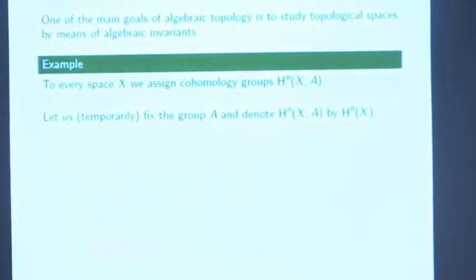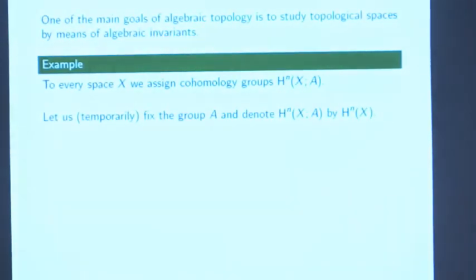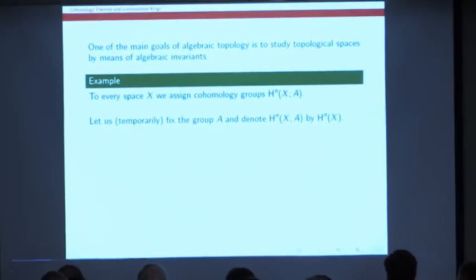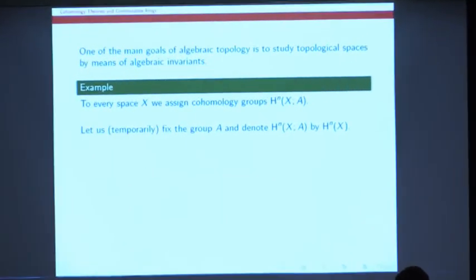And I'm going to start the story not in algebraic geometry, but instead in algebraic topology. So algebraic topology is the means of algebraic invariance. So one of the most important algebraic invariants, one of the most useful is the cohomology of a space X with coefficients in an abelian group A. So let me temporarily denote that just by H^N of X, not mentioning the abelian group A. There are lots of different constructions of these cohomology groups, and for sufficiently nice spaces, they all give the same answer.